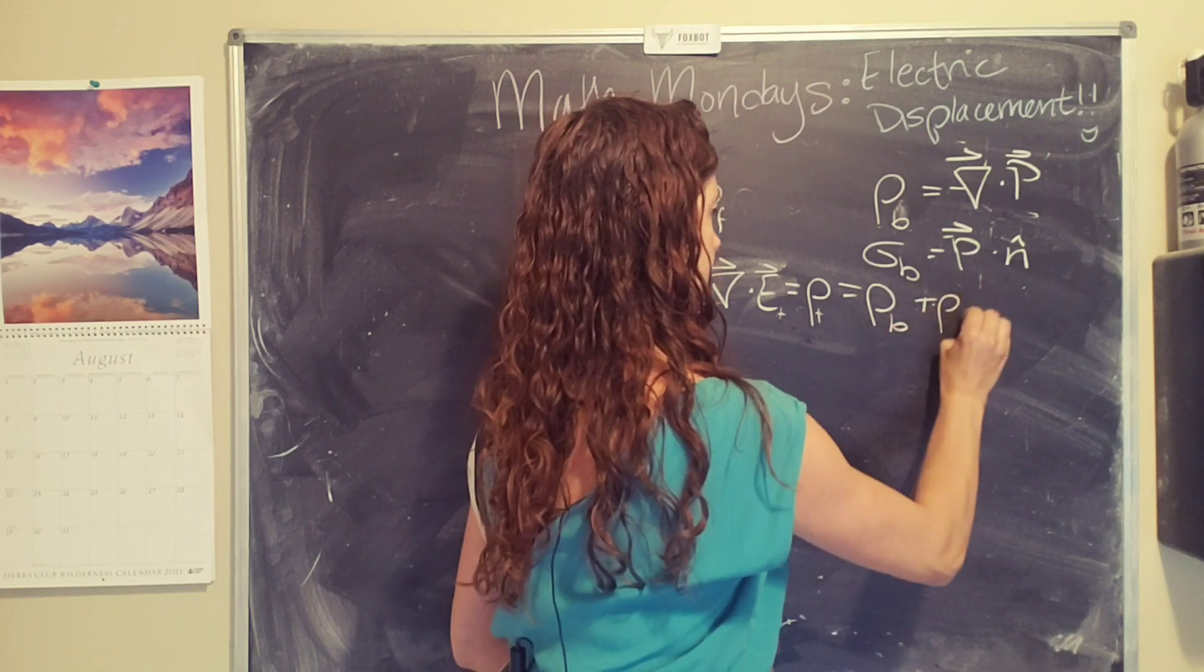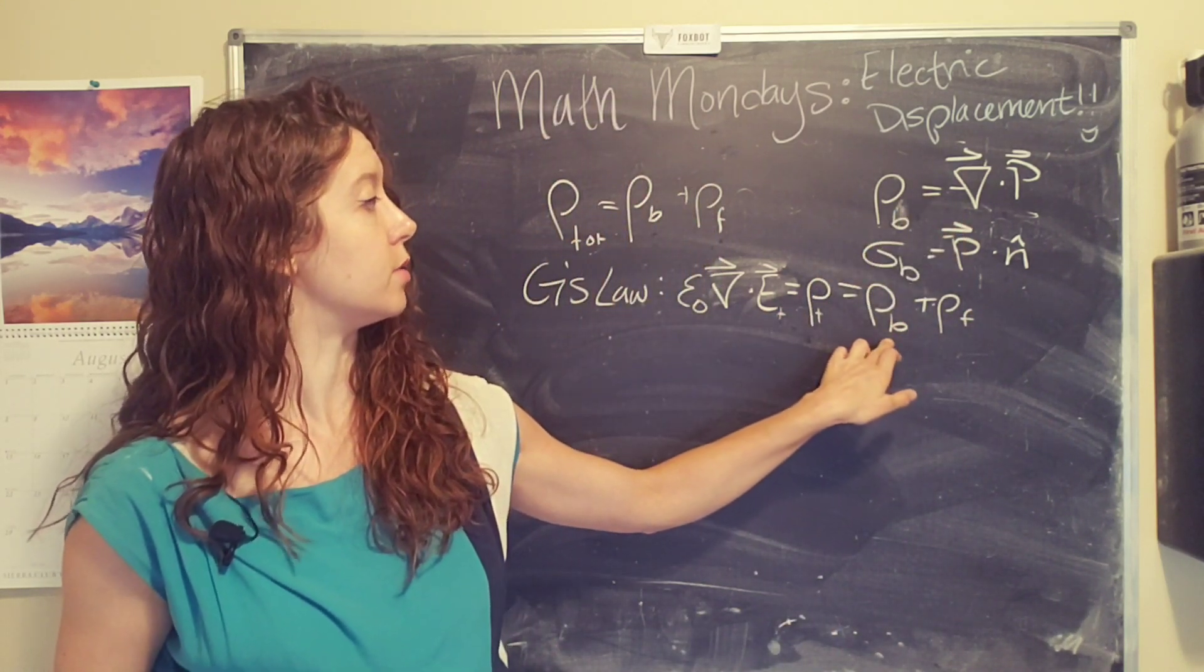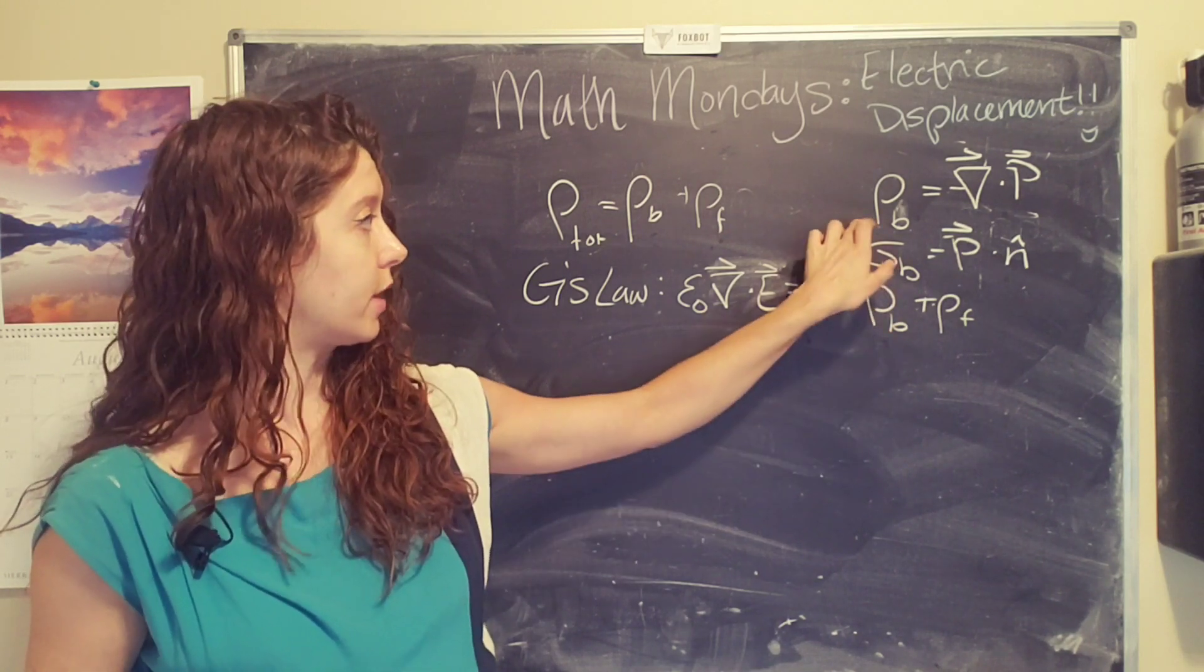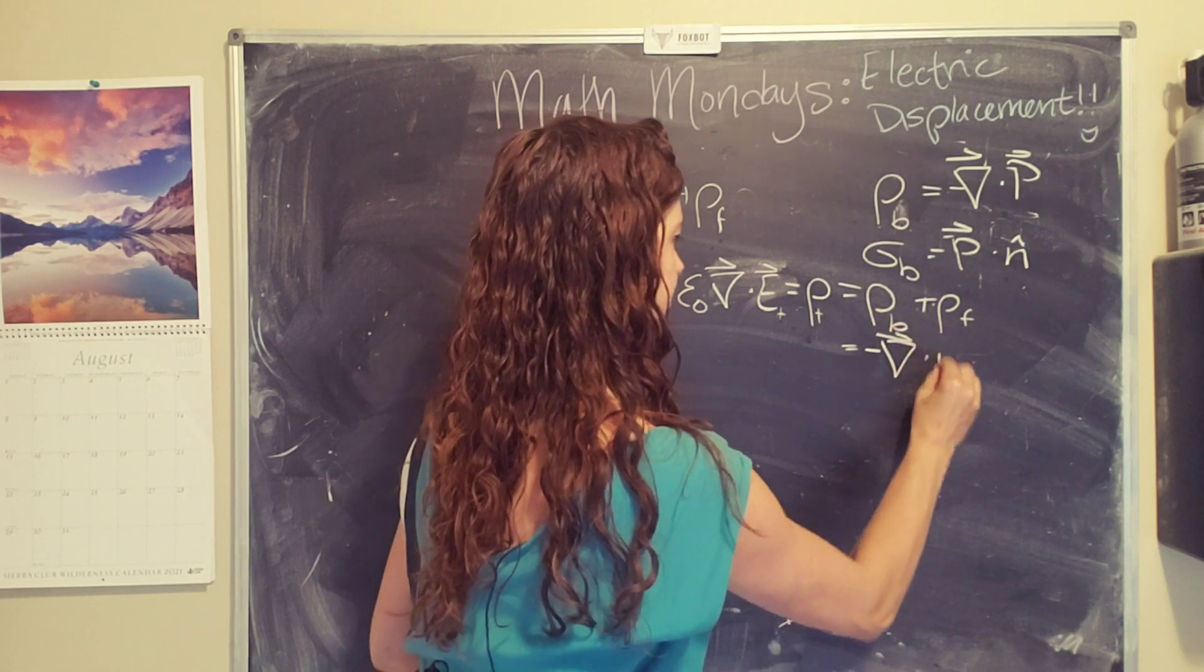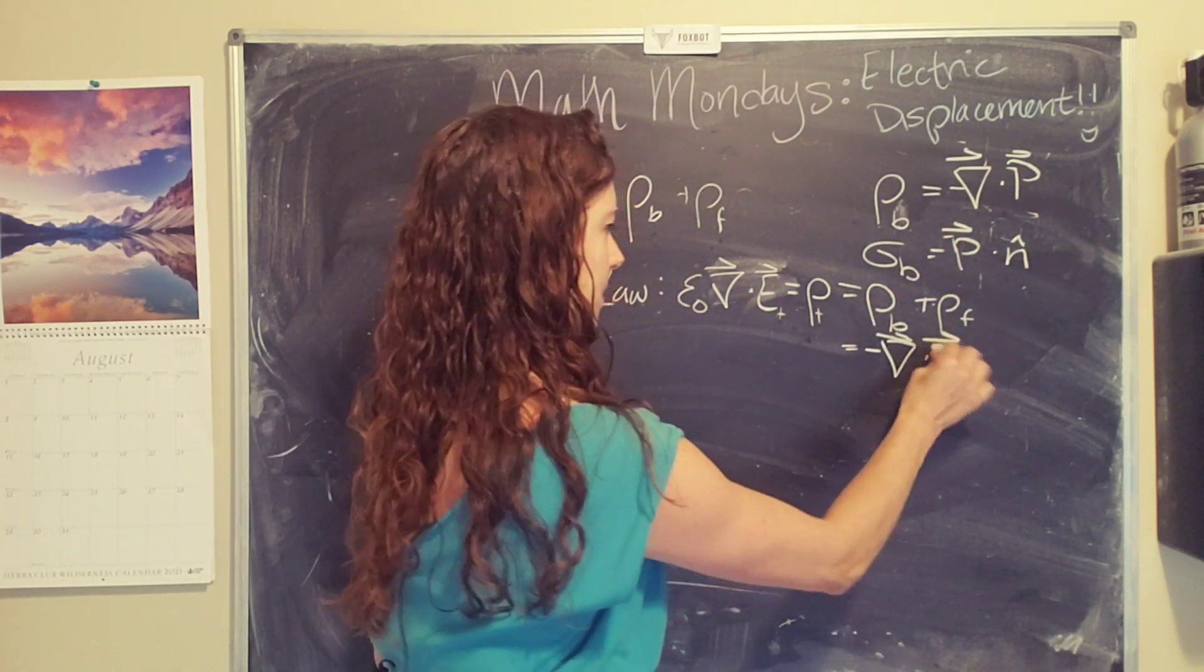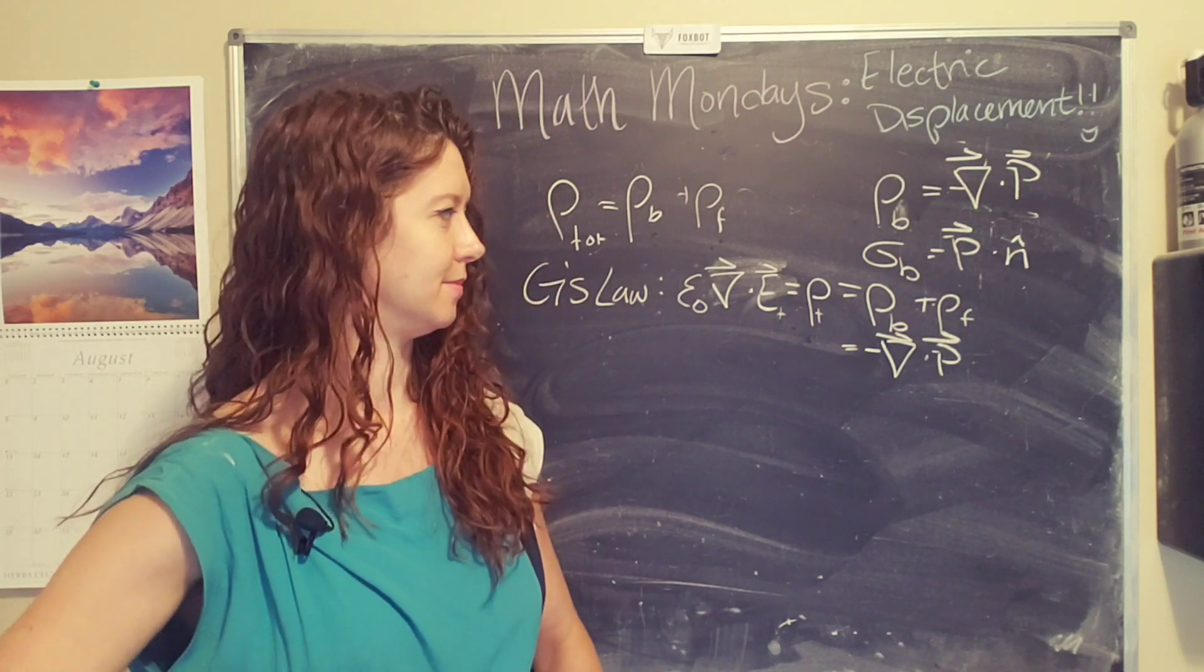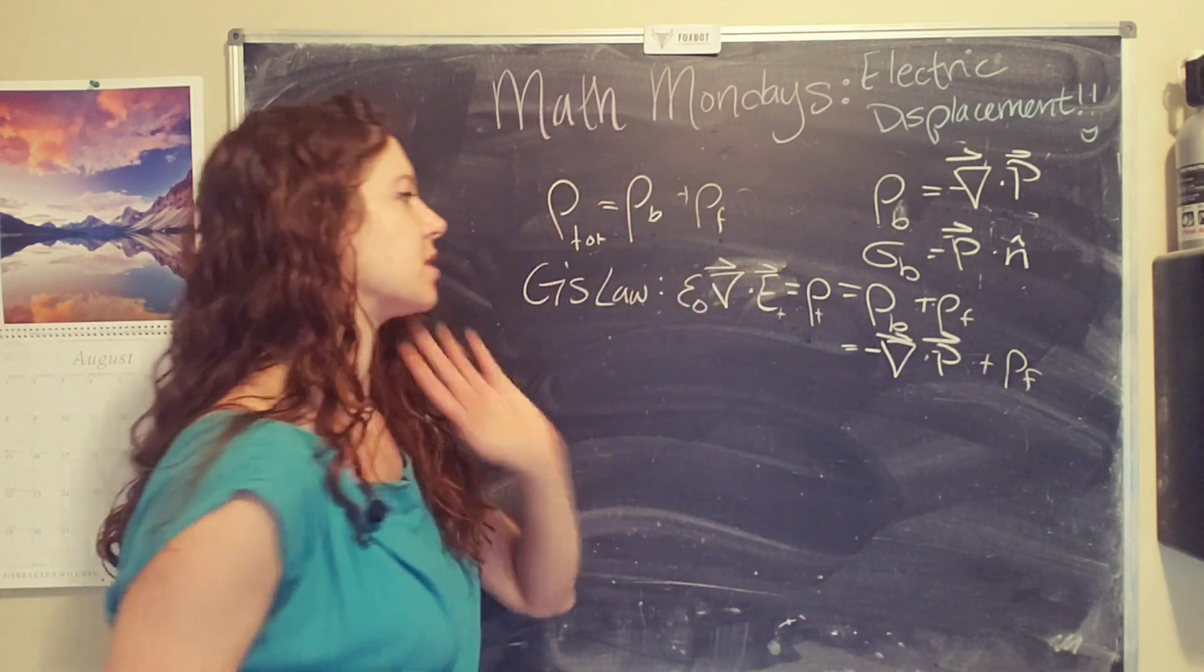So, free. But we can replace the bound charge density with this term. So we end up with the divergence of the total polarization, capital P, which is why I'm adding this little funky hat to the P, plus the free charge density.